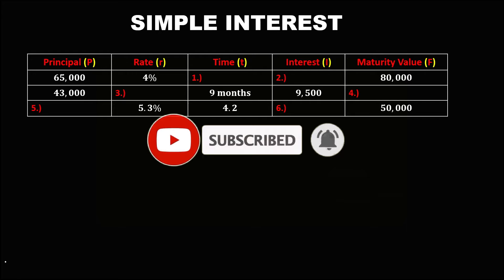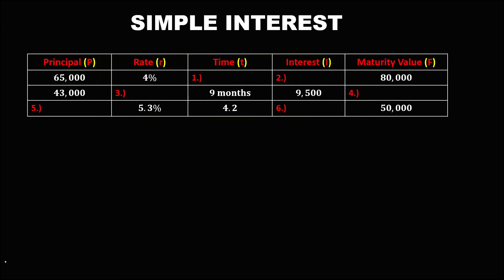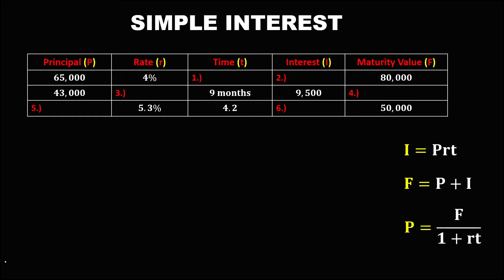To solve these simple interest problems, here are the formulas we'll use. To find the interest: I = P × r × t. To find the maturity value: MV = principal plus interest. And to find the principal amount: P = maturity value divided by (1 + rate × time).